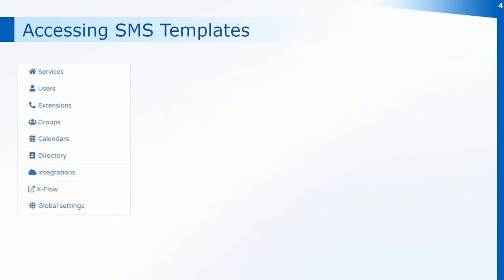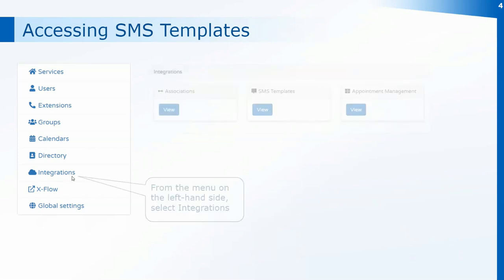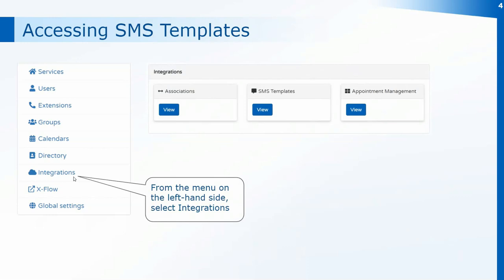Once in the configuration console your menus will be down the left-hand side of the screen and you'll need to access the section marked as Integrations. Normally you would go into the association section to find the pin number for the integration software, however there is also an application window here for SMS templates, and if you click on the View button it will show you the templates already set up within the practice.